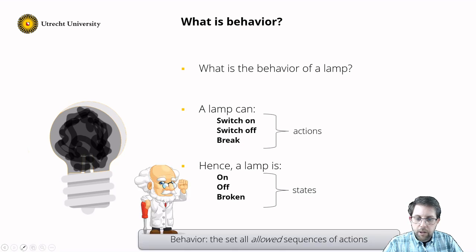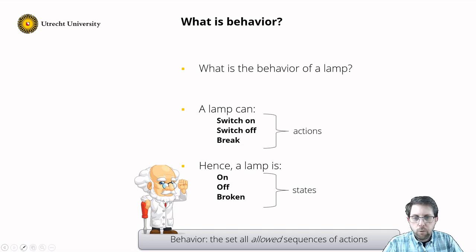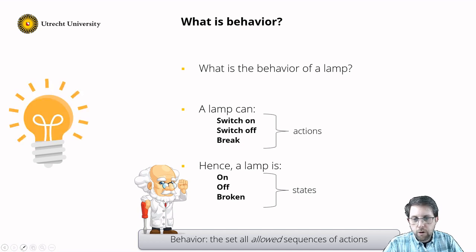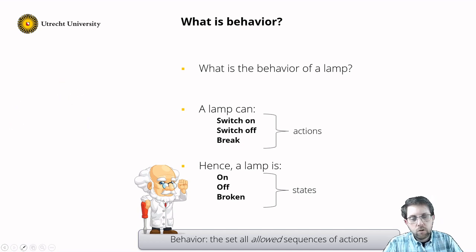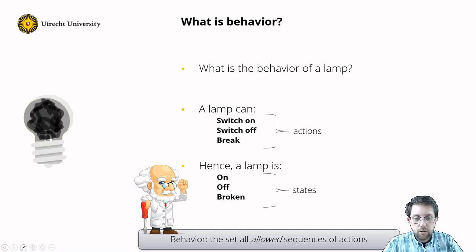We can define behavior as a set of all allowed sequences of actions. Notice that I say allowed actions, because if we have a lamp that switches on, we can't switch it on again. So allowed behavior for the lamp: we can switch it on, switch it off, and then it breaks. Or switch it on, off, on, off, and it breaks. Or switch it on and it breaks. Or it directly breaks. So there is an infinite set of behaviors.